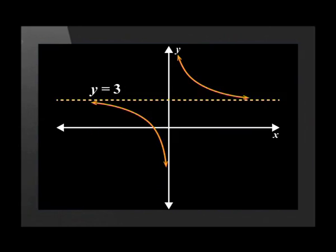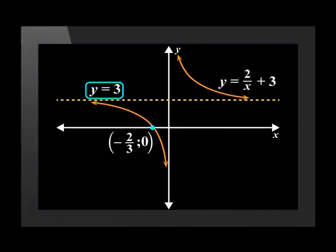The q-value is 3, which means the asymptote and the graph have shifted 3 units up. The vertical asymptote is still x is equal to 0. We worked out before that the x-intercept is negative two-thirds, so that completes the sketch.